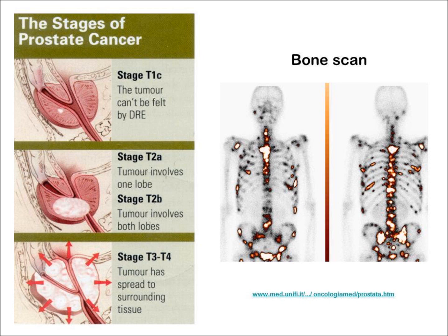T1 represents a very small localized tumor. Stage T2 is where the primary tumor is larger but still confined to the prostate. Stages T3 and T4, the tumor has spread to the surrounding structures. Prostate cancer often metastasizes to the bone, and to test for this, a bone scan may be performed. A radioactive substance is injected into the patient and is taken up preferentially where bone remodeling is taking place. Hotspots can indicate the presence of metastases from prostate and other types of cancers.